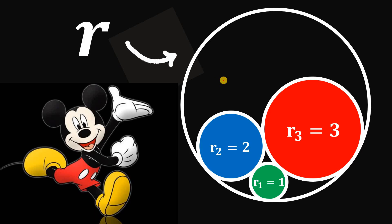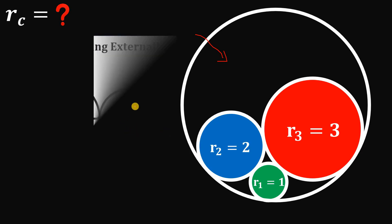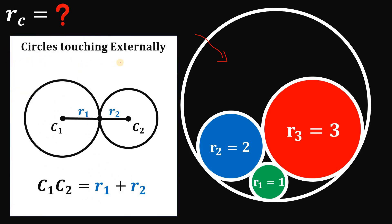You can pause this video if you want to give this problem a try. Our goal is to find the radius of this big circle. To answer this question, we will use some laws and theorems. The first one is: when two circles touch externally, the centers of these two circles and the point of tangency are collinear, and the distance between the two centers must be the sum of their respective radii.